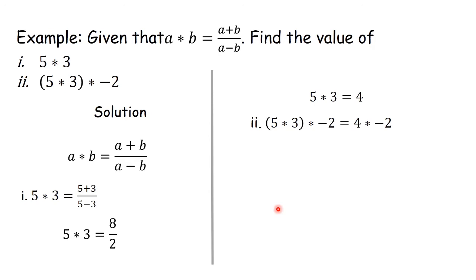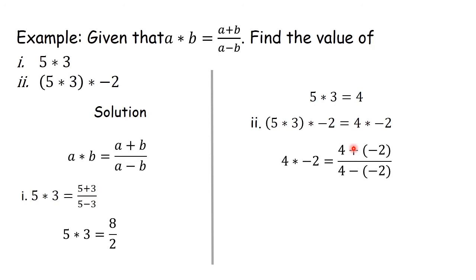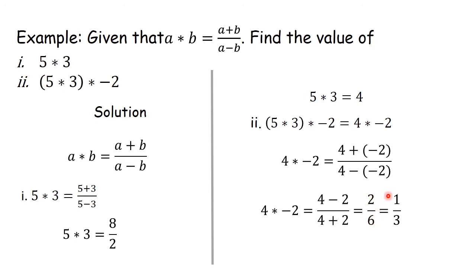For part two, we have (5★3)★(−2). Remember 5★3 has given us 4, so we substitute 4 there and it becomes 4★(−2). So 4★(−2) gives us 4 plus negative 2 divided by 4 minus negative 2, which gives us 4 minus 2 over 4 plus 2, that is 2 divided by 6. Reducing by 2 gives us one third. So (5★3)★(−2) is equal to 1/3.